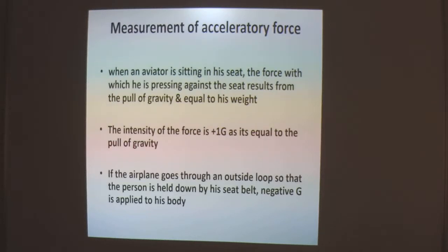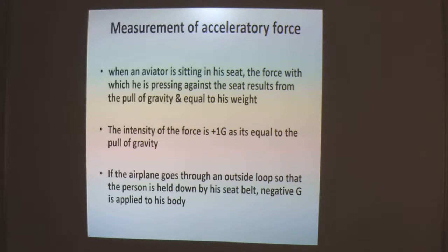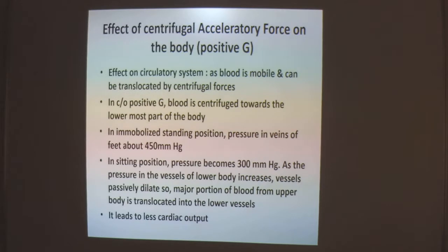Measurement of the acceleratory force: when an aviator is sitting in his seat, the force with which he presses against the seat results from the pull of gravity and is equal to his weight. The intensity of this force is 1G, as it is equal to the pull of gravity. If the airplane goes through an outside loop so that the person is held down by his seatbelt, negative gravity is applied to his body.